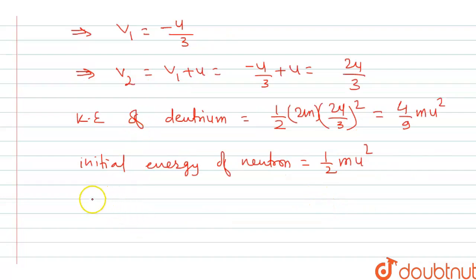So for fraction we will simply divide it and we will get the answer. So fraction will be 4 upon 9 mu squared divided by half mu squared, which is 8 upon 9.